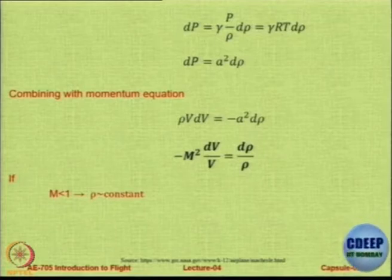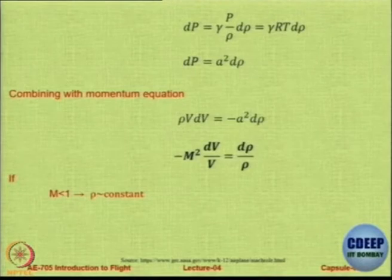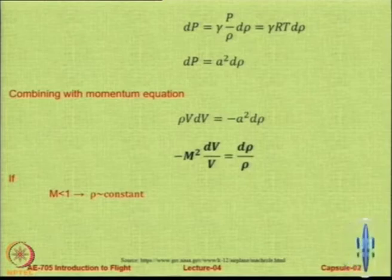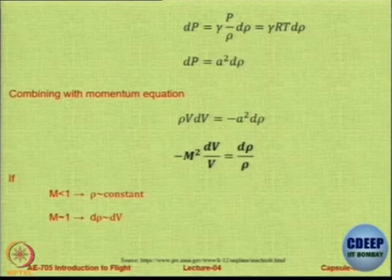Mach number is a link. For example, if Mach number is 0, then change in density is 0. If Mach number is equal to 1, then dV by V is equal to d rho by rho — so change in velocity and change in density are related. If Mach number is less than 1, it is a very small number because it is squared. Let us say Mach number is 0.1 — it will be 0.01 times dV by V, which can be neglected, so d rho by rho is almost equal to 0, meaning density is almost constant.